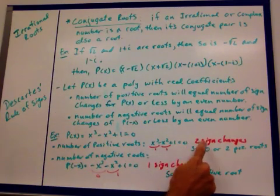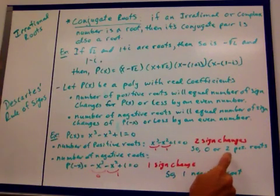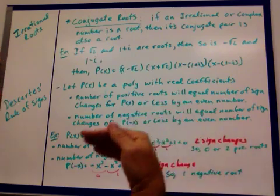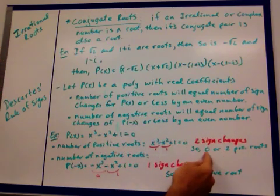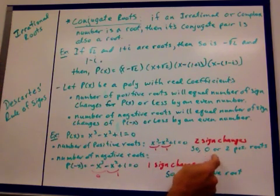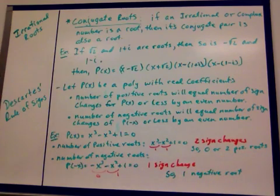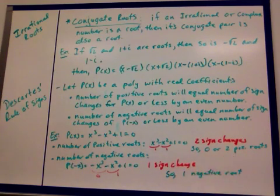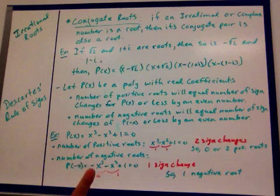So I have two sign changes, so that means I could have 2, or I could be less an even number, less 2. So I can get 0 or 2 positive roots. I don't know what they are, but I know I could have 2 or 0 positive roots. I won't just get 1 positive root. It's either going to be 0 or 2.